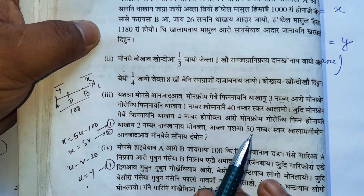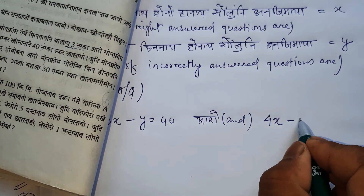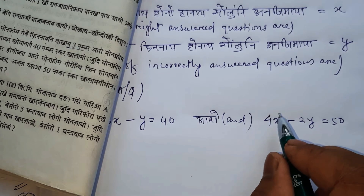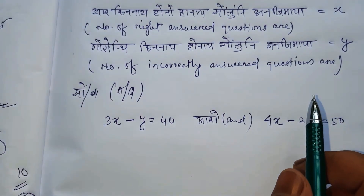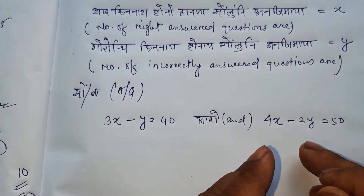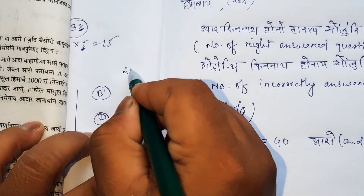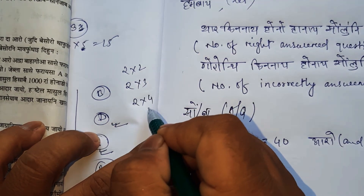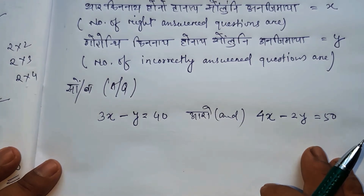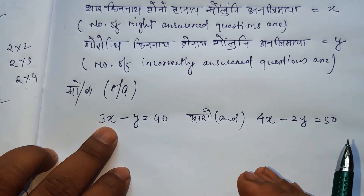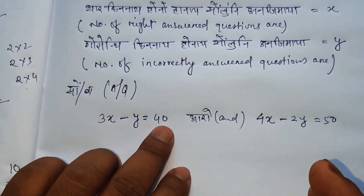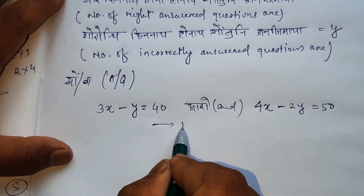So equation 2 is: 4x minus 2y equals 50. We now have two equations: equation 1 is 3x minus y equals 40, and equation 2 is 4x minus 2y equals 50.